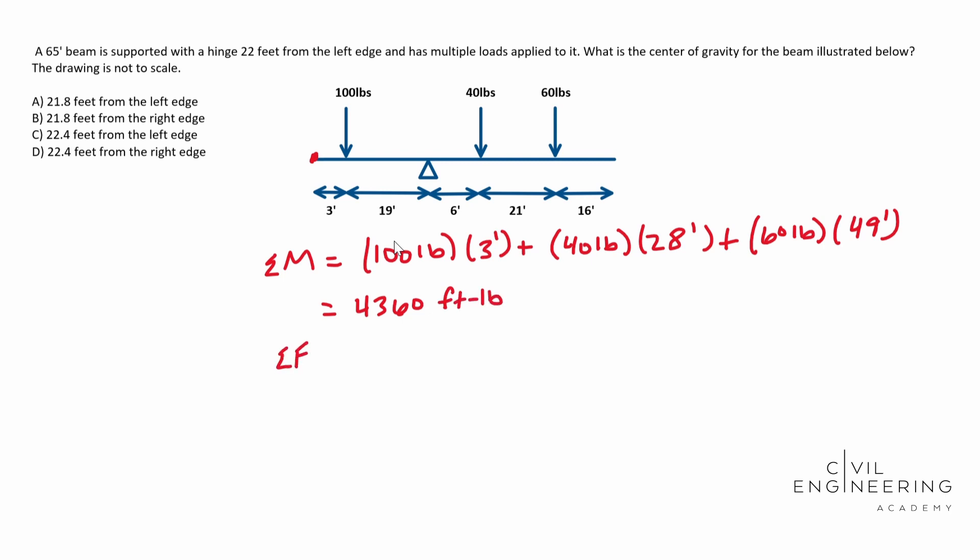Now we need to add our forces. So your sum of the forces, you're going to do 100 pounds plus 40 pounds plus 60 pounds. And the trick to this is we're basically finding the weighted average for our length. So we're going to do 4360 foot pounds.